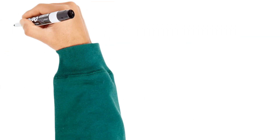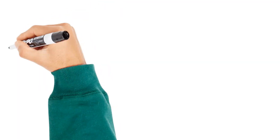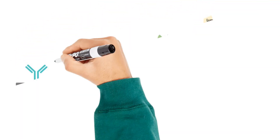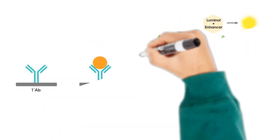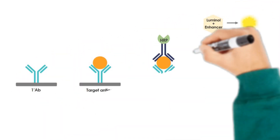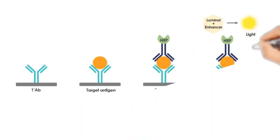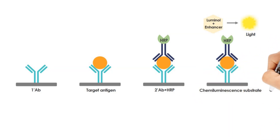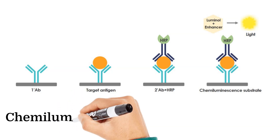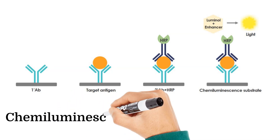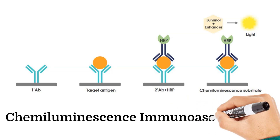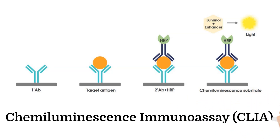Chemiluminescence immunoassay involves beads or plates coated with a primary antibody that binds insulin from the sample. A secondary detector antibody labeled with an enzyme is added to form a sandwich antigen-antibody complex. A luminol substrate is then added to facilitate a chemical reaction causing the substrate to emit light, which is measured and is proportional to the insulin concentration.